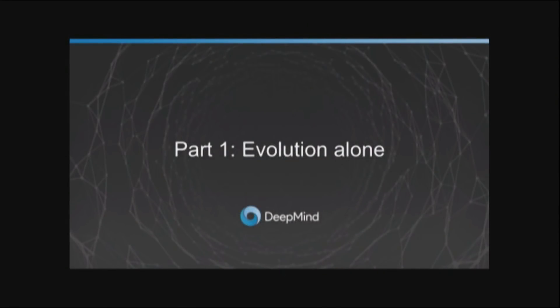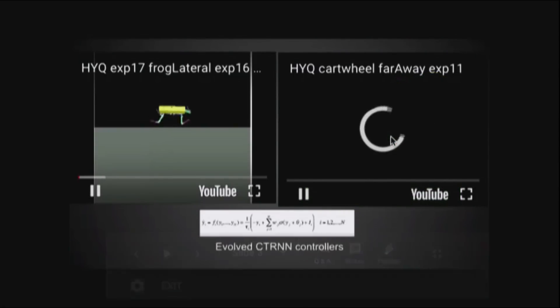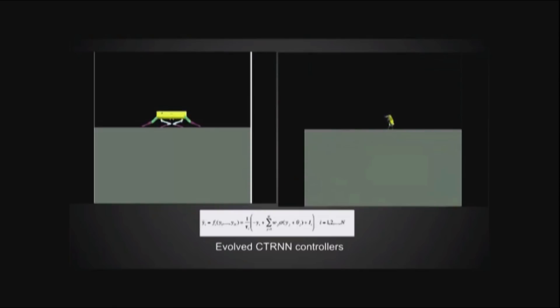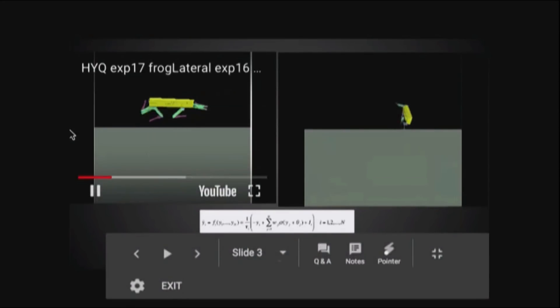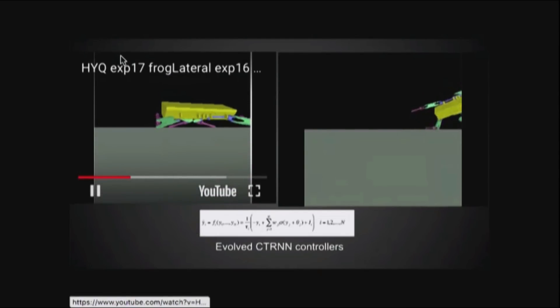When I first came to DeepMind, I was very interested in combining evolution and learning, but for the first year I ended up just doing evolution because nobody believed in it. So what I managed to do with Dylan was basically to evolve lots of fairly small things. Evolution at the time was very good for evolving small controllers of things.